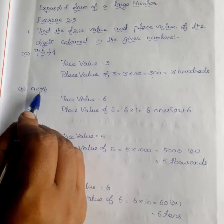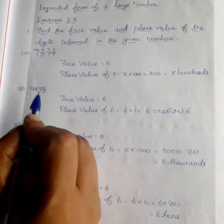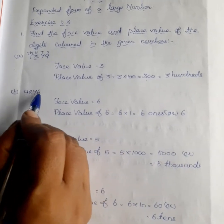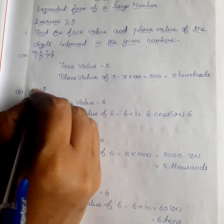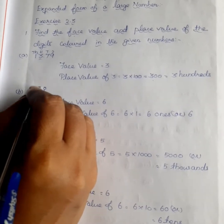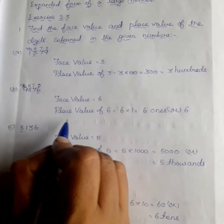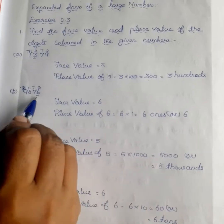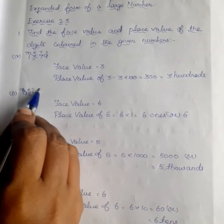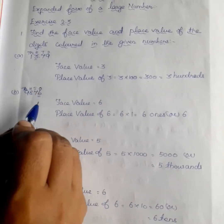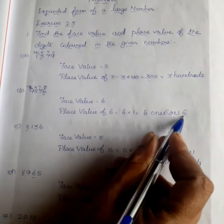Next, 9876. The face value of 6 is 6. Considering places 1, 10, 100, 1000, the place value of 6 is at the 1's place, so 6 into 1 equals 6.